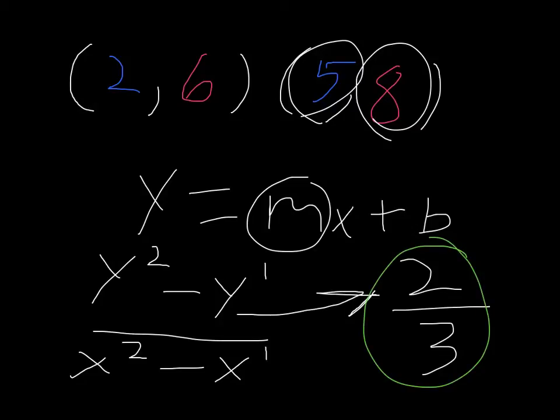Now, what the slope is, the slope is the constant rate of change of a line on a graph as it goes up or down. So, for example, our slope is 2 thirds.